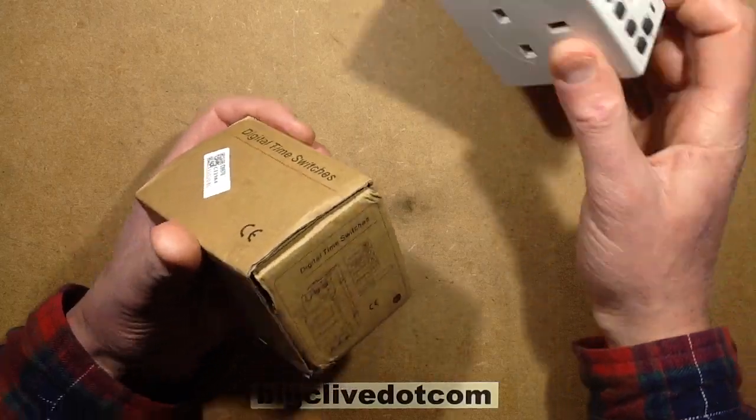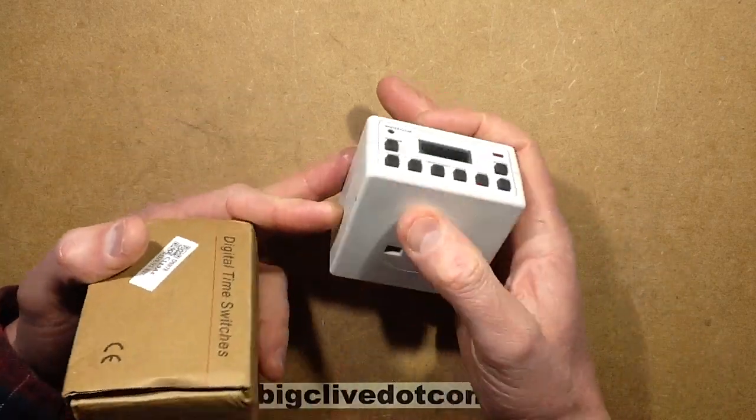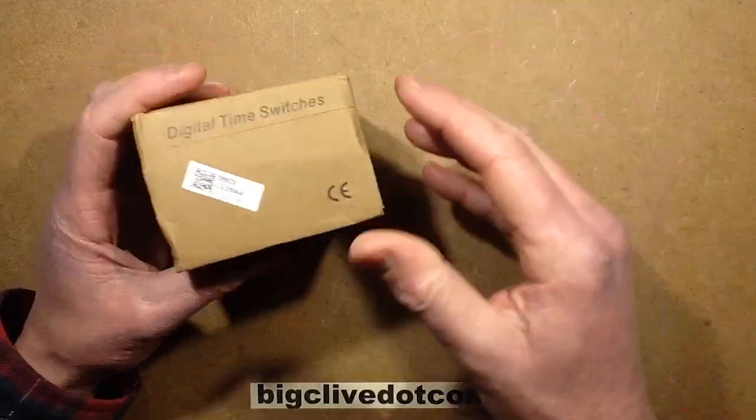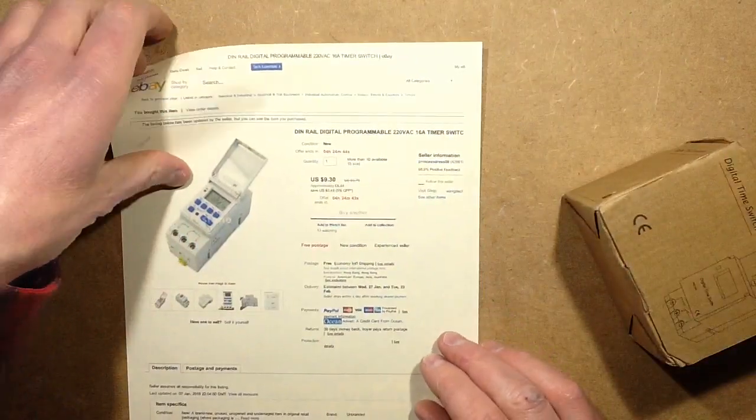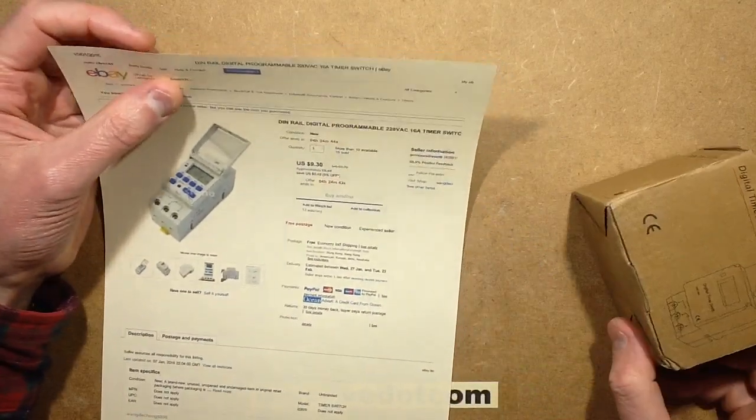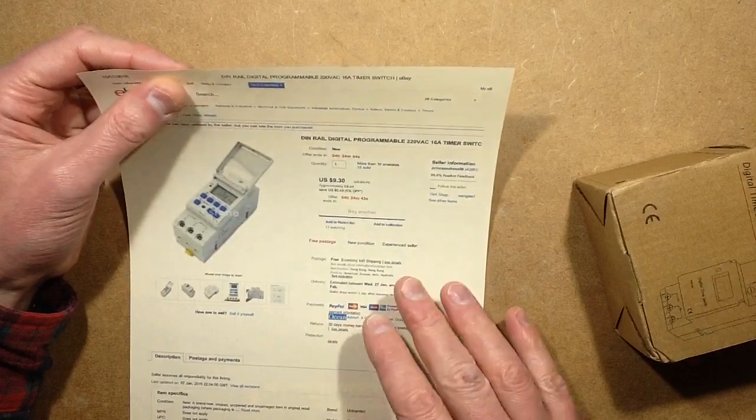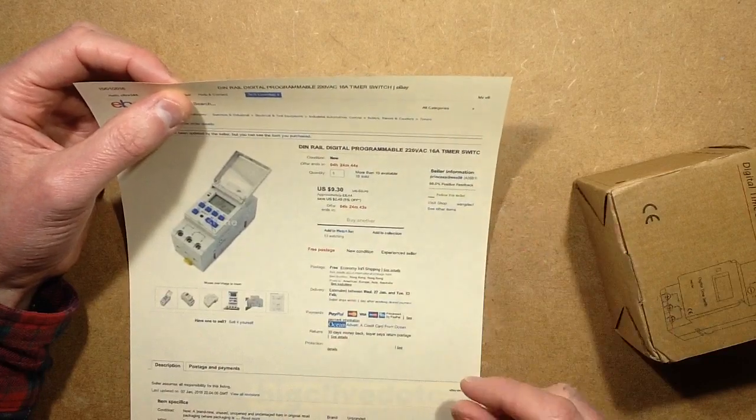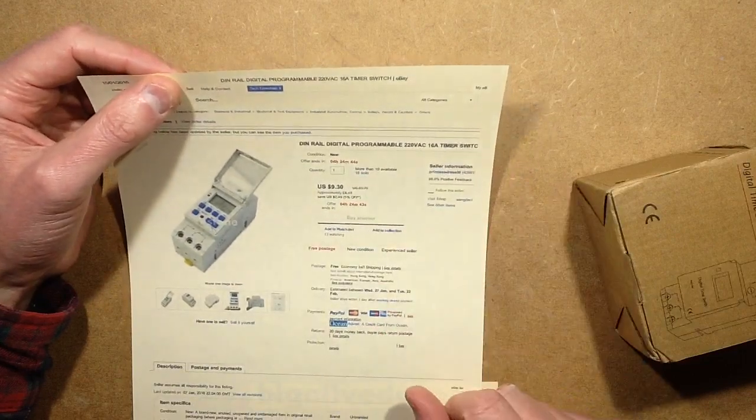You consider that time switches are a really common device. It makes sense that the industrial version would be very similar to one of these cheap plug-in ones because it basically has the same functions, the same chip. This one came from Princess Dress 08, and someone recently said if you see someone selling ladies clothing and beanie hats, you shouldn't be buying technical components from them.